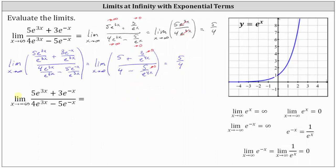Now let's take a look at the next limit. We have the limit of the same function, but now x is approaching negative infinity. Let's check the form. 5e to the power of 3x approaches 0 as x approaches negative infinity, because the exponent on e is approaching negative infinity. 3e to the power of negative x approaches positive infinity as x approaches negative infinity, because the exponent is negative x, and the opposite of a negative is a positive — the exponent on e is increasing without bound. Similarly, in the denominator, 4e to the power of 3x approaches 0, and minus 5e to the power of negative x approaches positive infinity. So the limit is in the form infinity divided by negative infinity, which is an indeterminate form.